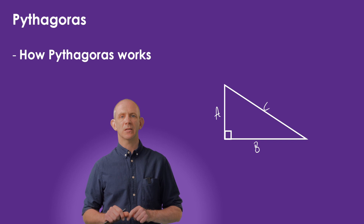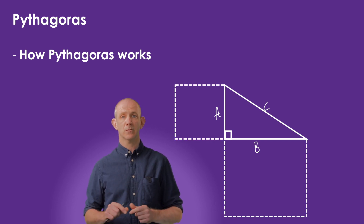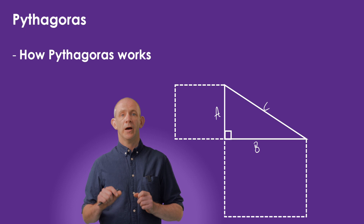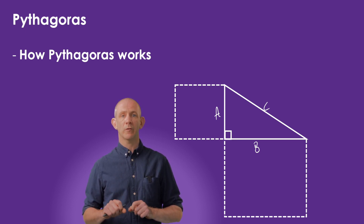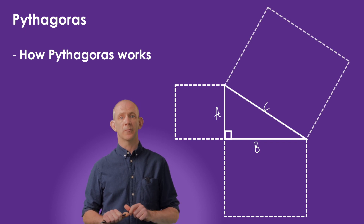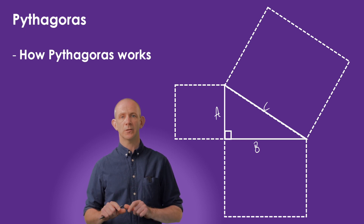Pythagoras Theorem states that if I made a square out of side A and side B, then the sum of the area of those two squares would equal the area of the square created by side C. This means we can state that A squared plus B squared equals C squared.